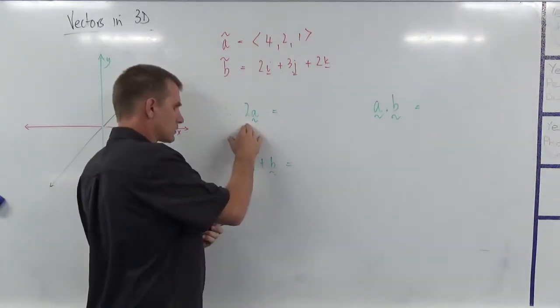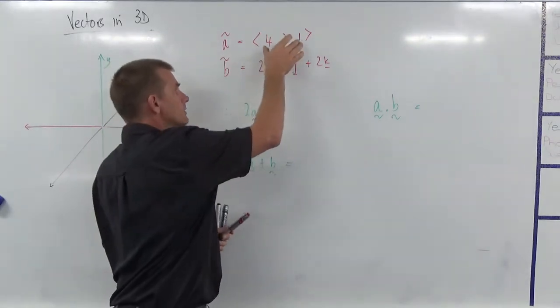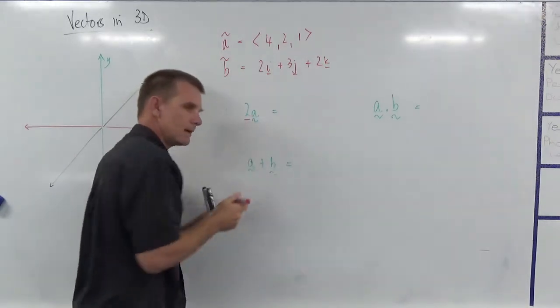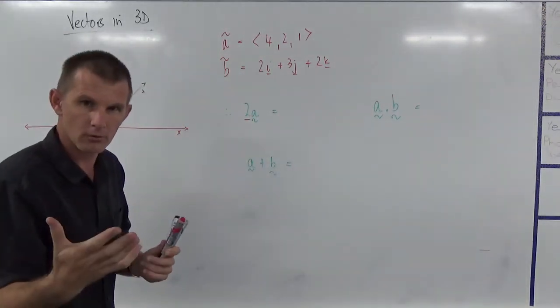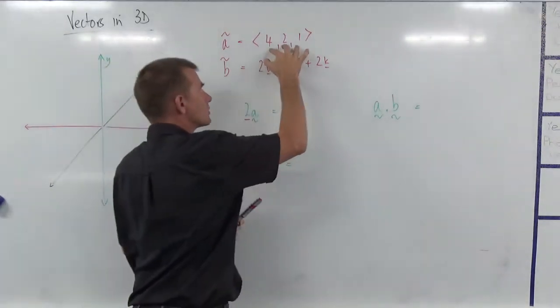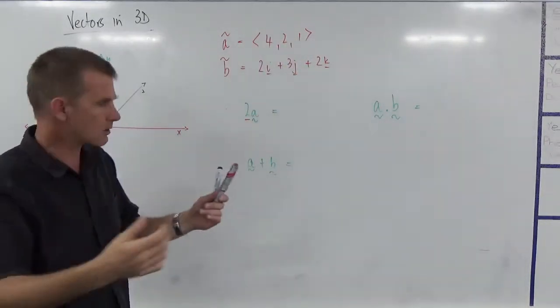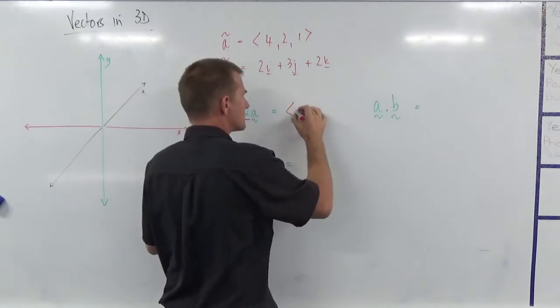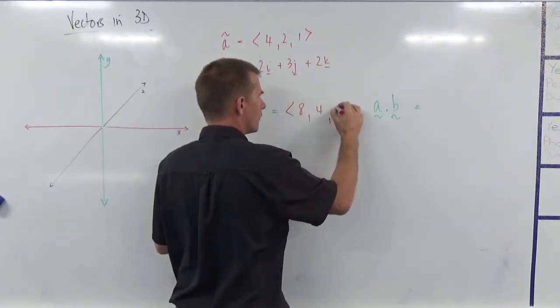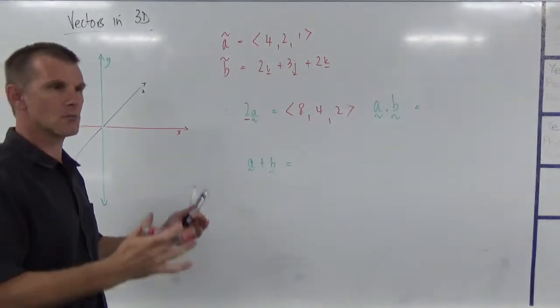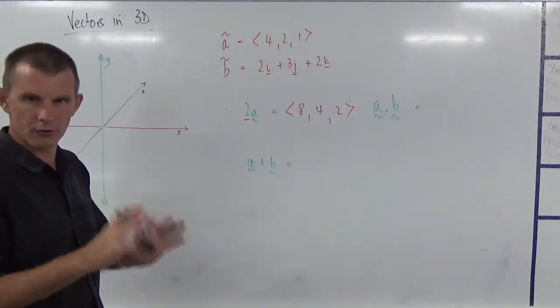So if I'm going to work out 2a, that's really just two lots of that. So the 2 is a scalar multiple. So that means it doesn't change the direction of this. It just changes the magnitude. So my answer there is just going to be 8, 4, 2. Because I'm just doubling everything. I'm just changing the magnitude of it, not the direction of it.